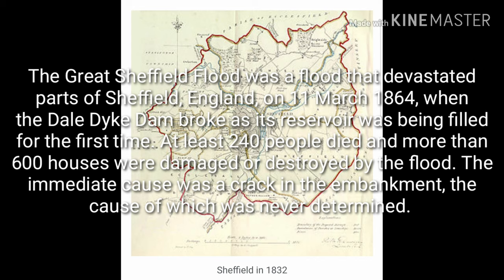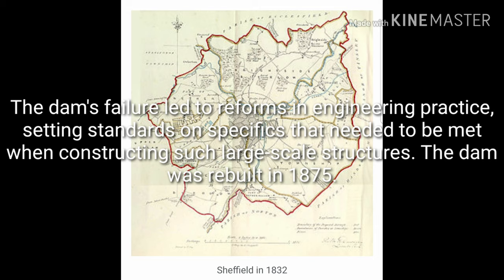The Great Sheffield Flood was a flood that devastated parts of Sheffield, England on 11th March 1864, when the Dale Dyke Dam broke as its reservoir was being filled for the first time. At least 240 people died and more than 600 houses were damaged or destroyed. The immediate cause was a crack in the embankment, the cause of which was never determined. The dam's failure led to reforms in engineering practice, setting standards on specifics that needed to be met when constructing such large-scale structures. The dam was rebuilt in 1875.